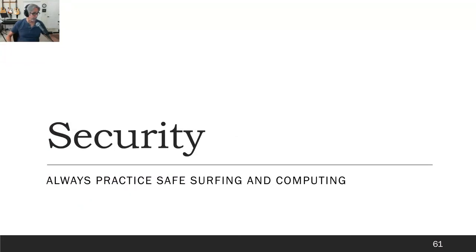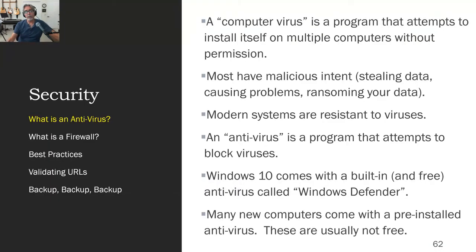How do you be safe? There are no demonstrations — it's just going to be secure information to make you a safer person out on the web. What is a virus? A computer virus is a program that tries to put itself on as many computers as possible with or without permission. In other words, it replicates like viruses do — that's where the name came from. Most of them are bad actors. They try to maliciously steal your data, mess with your computers, encrypt your data, and lock it up.